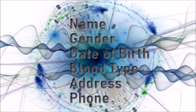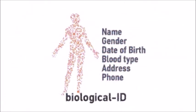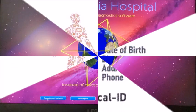Required information that determines your Quantum ID are name, gender, date of birth, blood type, address, and phone.